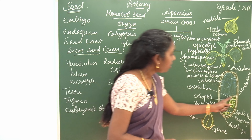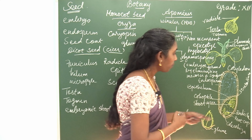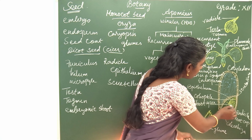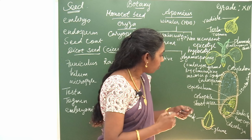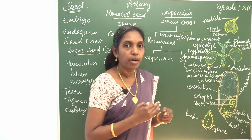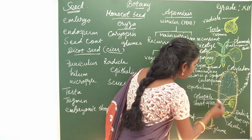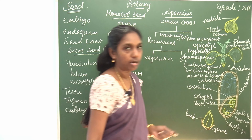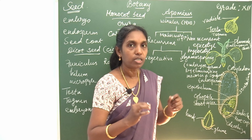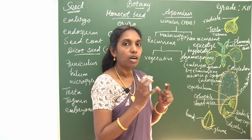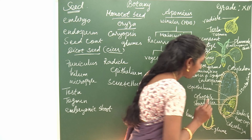In this scutellum, the radicle and plumule regions arise. The radicle and plumule are protected by another structure. The radicle part is protected by an outer protective layer known as coleorhiza.